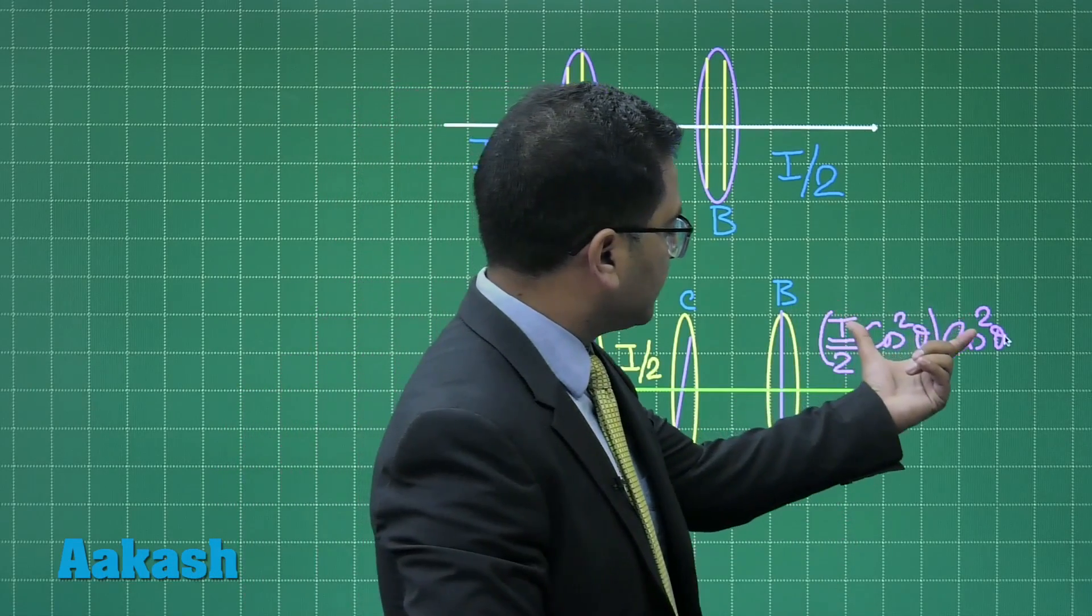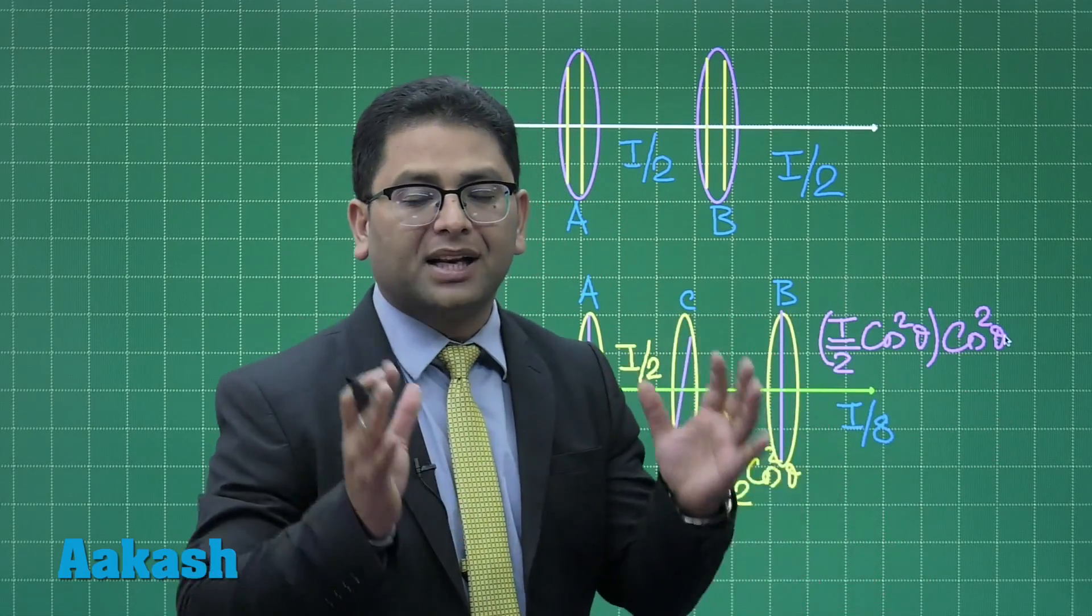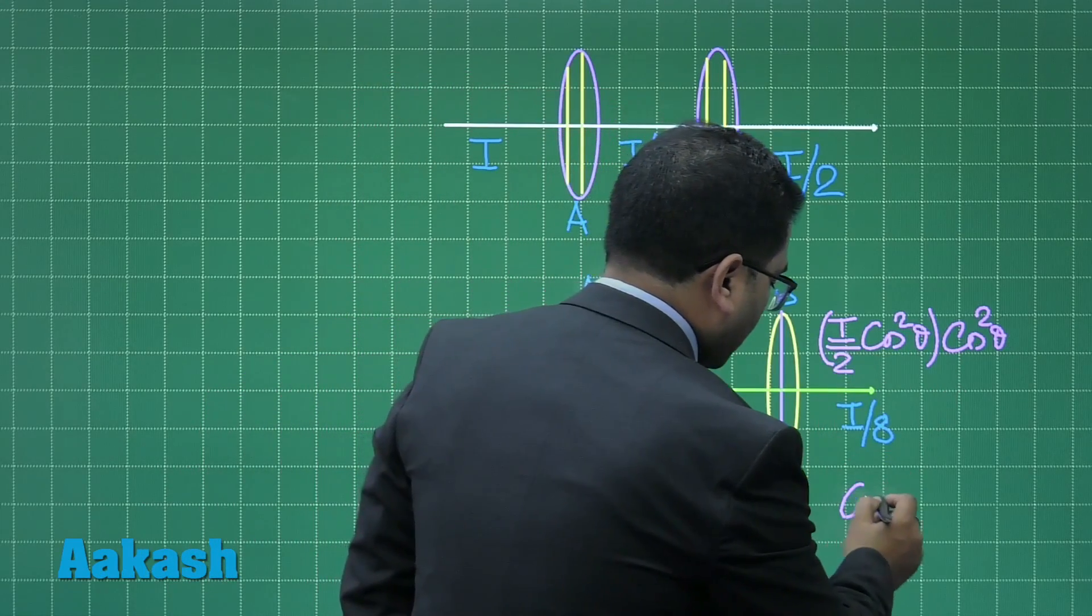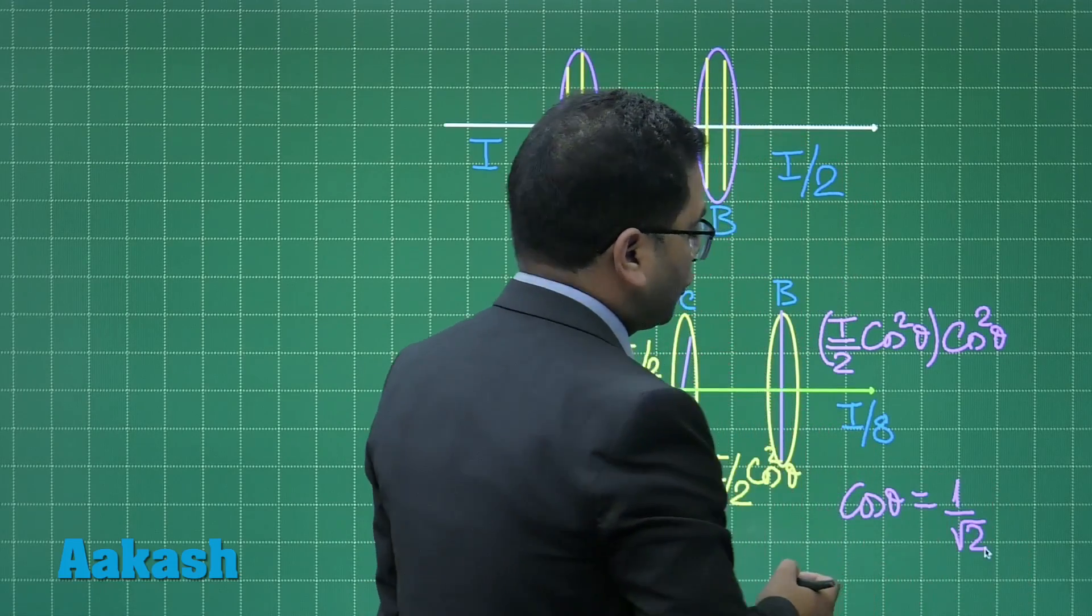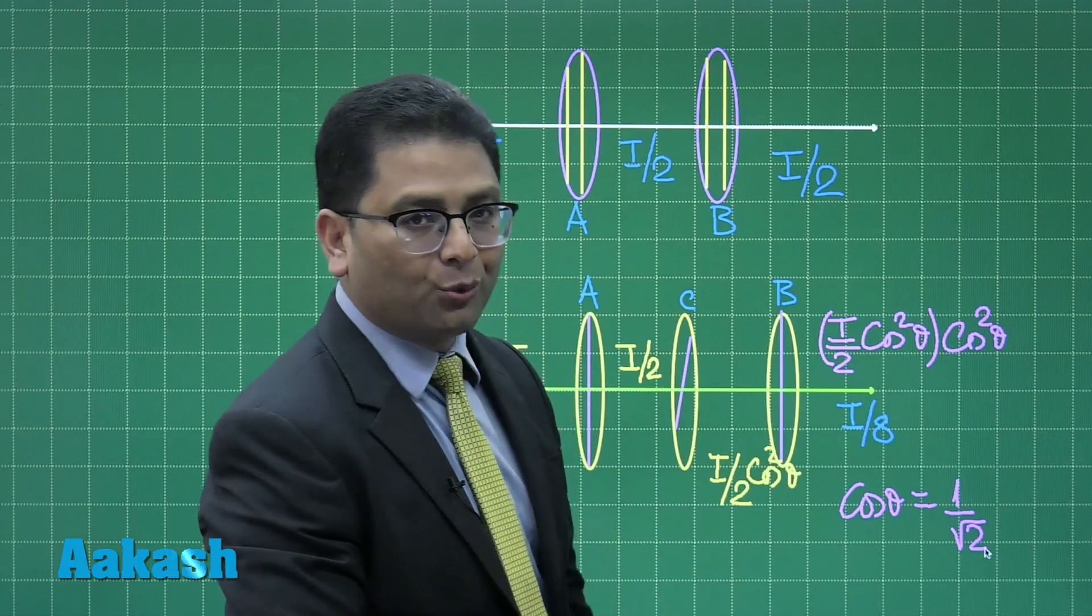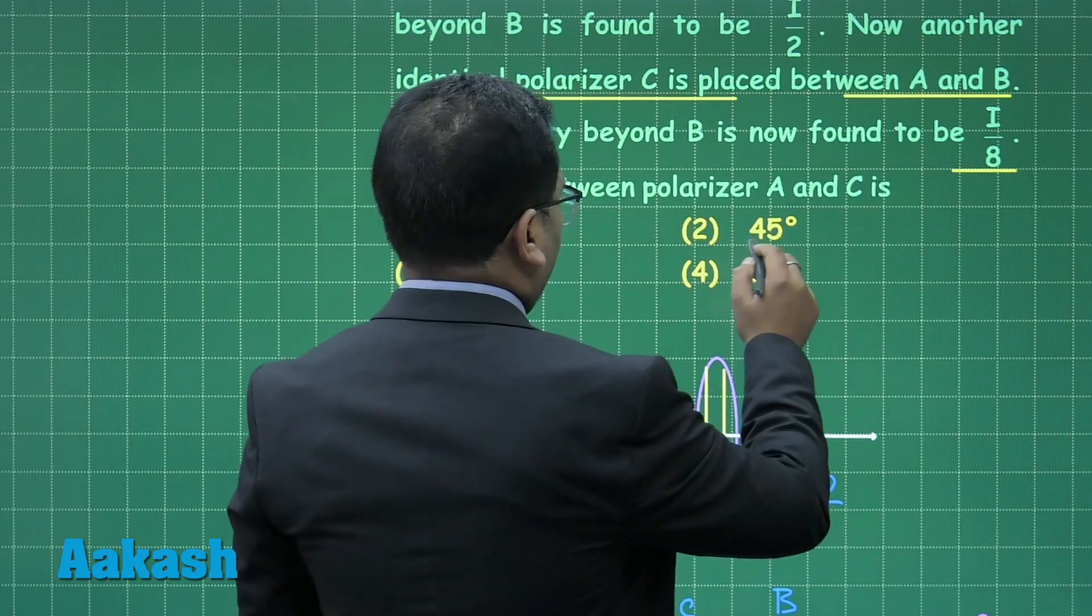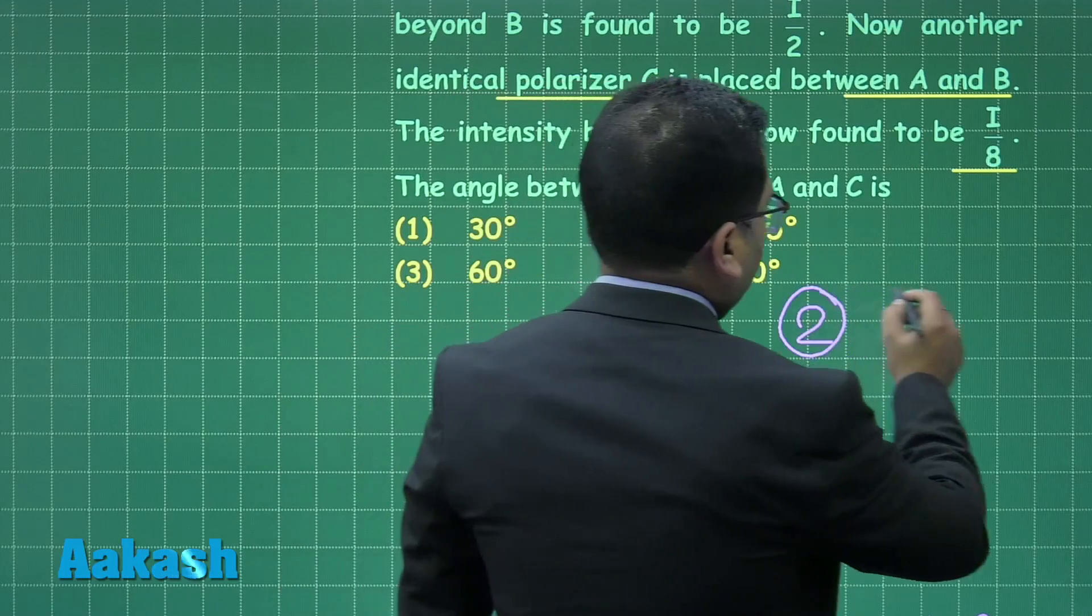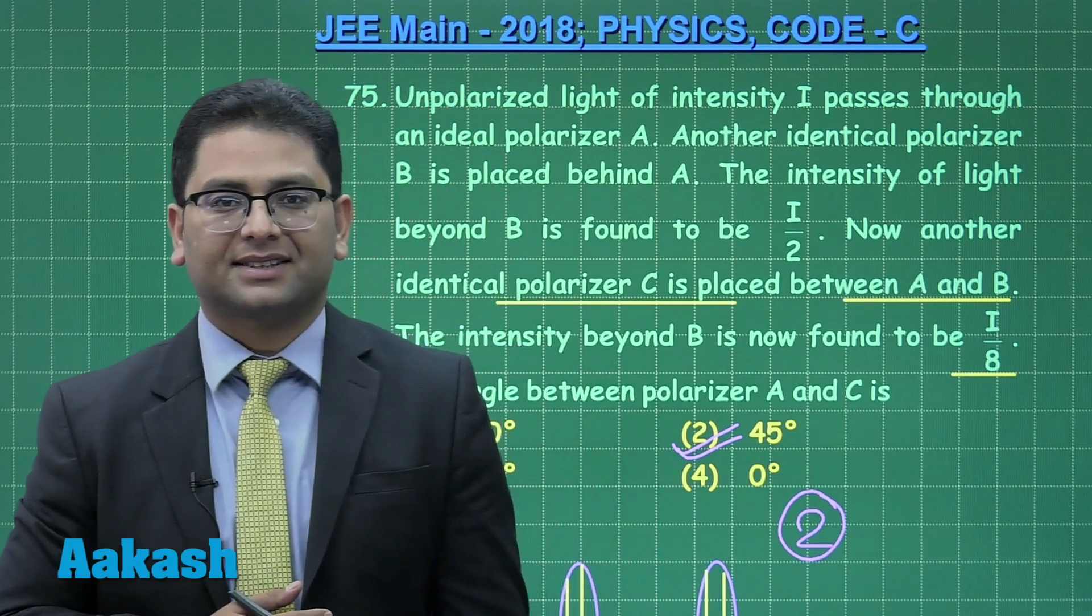All you need to do is equate this with this, and that is a straightforward simple calculation. That value will be cos theta equals 1 by root 2, and theta will be pi by 4 or 45 degrees, whichever language you want to use. So the angle between polarizer A and C would be 45 degrees. Option number 2 is the correct answer for question number 75. Now let's move to question number 76.